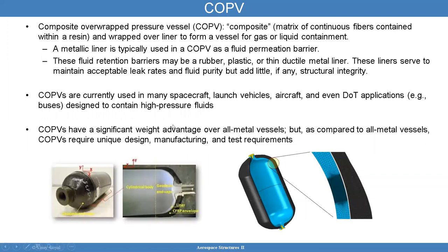Composite overwrapped pressure vessels are basically a composite that's wrapped on a liner. That liner material can be metallic, rubber, or plastic. The idea of this liner is to prevent fluid from escaping through the wall, while the composite is taking the majority of the load. In a netting analysis, we only focus on the composite to ensure it has proper capability to take the load. We assume that the liner's behavior is going to be primarily to act like a fluid permeation barrier.